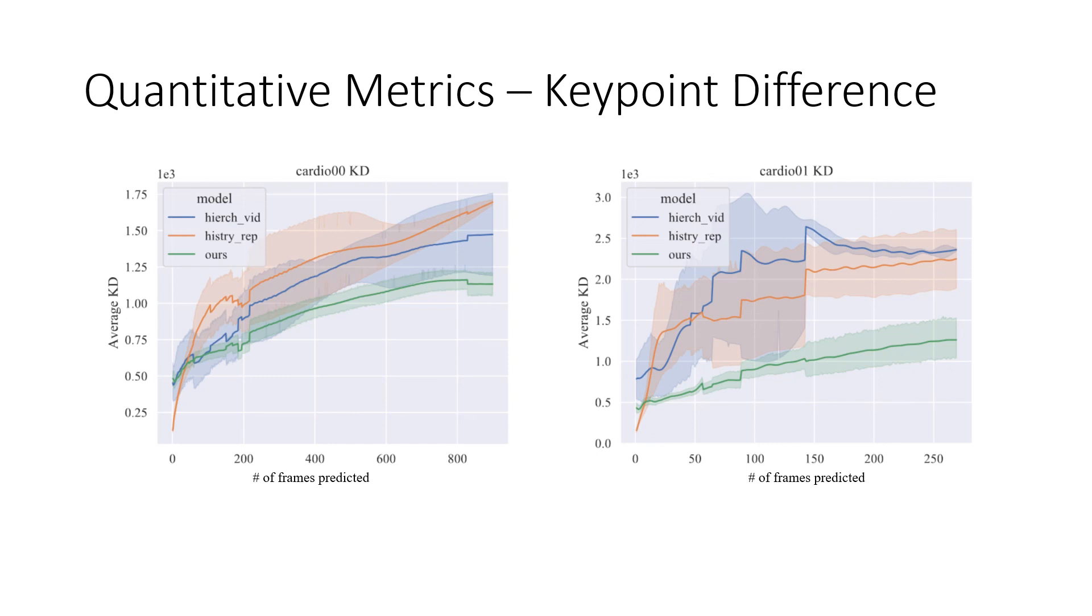Here are some quantitative results. It can be seen that after the first few frames, our model in green consistently gives lesser keypoint difference with the ground truth compared to the two baselines.